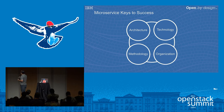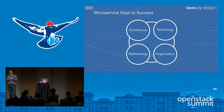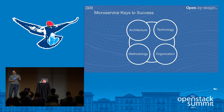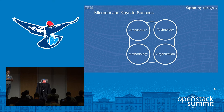These four things are the most important components of microservices: architecture and technology, which is what everyone talks about, but equally important is organization and methodology. If we don't consider those last two, that puts you at a disadvantage when building your solutions. You may have the best technology, but if your teams can't leverage it, or if you don't have your methodologies and procedures ready, the greatest technology can only get you so far.